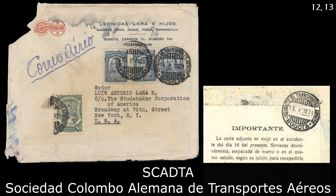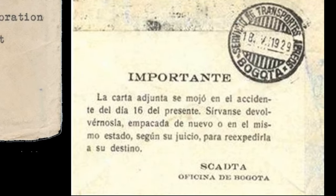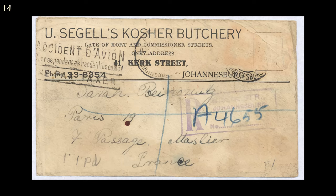Some people collect by continent — South America, for example. I show a cover from SCADTA, an airline in Colombia, which crashed on May 16th, 1929. It received a rather descriptive cachet from a post office in Colombia, and a label applied by the Bogotá post office. These are pretty rare — there are only a few known.